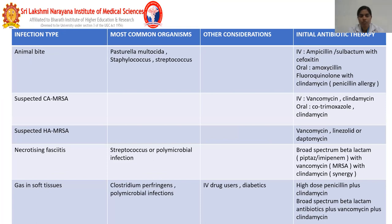For animal bites, the most common organisms are Pasteurella multocida, Staphylococcus, and Streptococcus. Treatment is ampicillin-sulbactam with cefoxitin, or oral amoxicillin with clindamycin. For patients with penicillin allergy, fluoroquinolones with clindamycin can be given. For suspected community-acquired MRSA: IV vancomycin and clindamycin or oral co-trimoxazole with clindamycin. For suspected hospital-acquired MRSA: vancomycin, linezolid, or daptomycin.